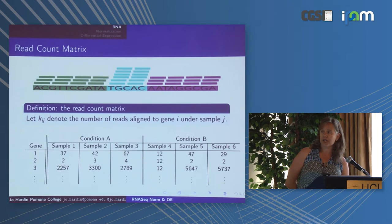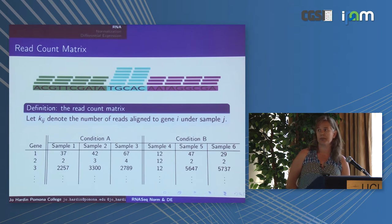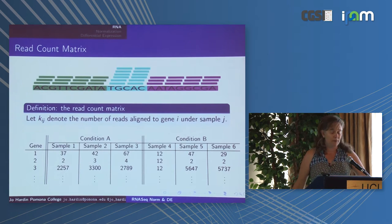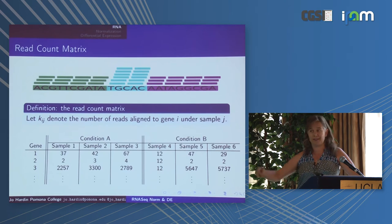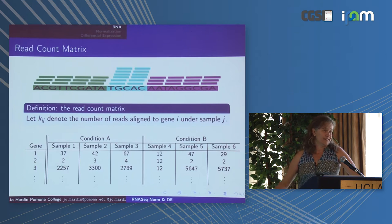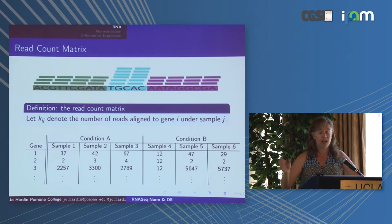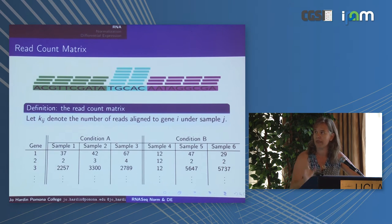This is what we get out of our sequencer. Let's say we have three samples under condition A, three samples under condition B, lots of genes — some highly expressed, some low expressed. We have these integers — these reads that come out of the machines. How many of those little cDNA fragments map to that gene on the genome. We want to compare this data in an apples-to-apples way.